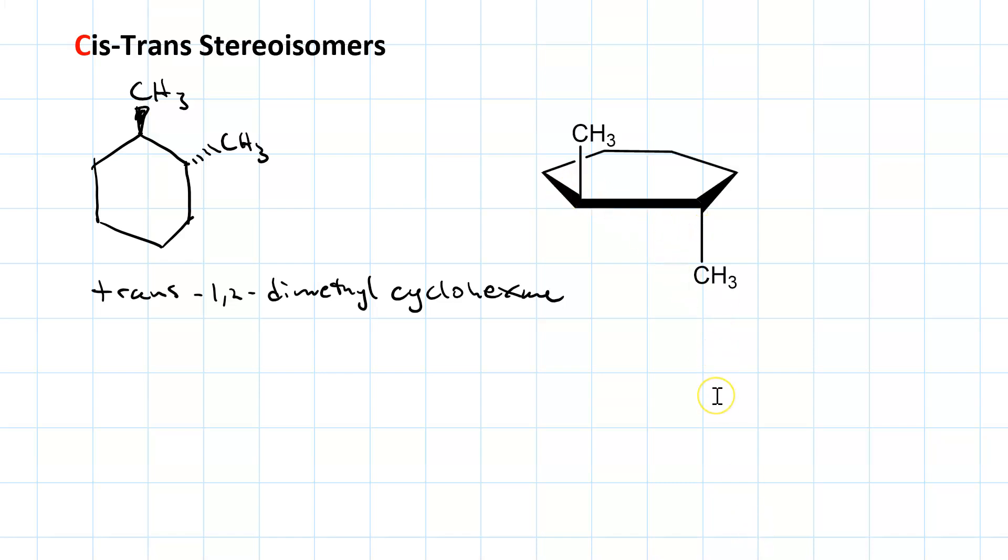Let's talk a little bit about cis-trans stereoisomers. So, we have 1,2-dimethyl cyclohexane, where one of the methyl groups is on a wedge, and the other one is on a dash that is trans-1,2-dimethyl cyclohexane.